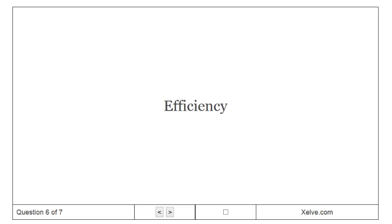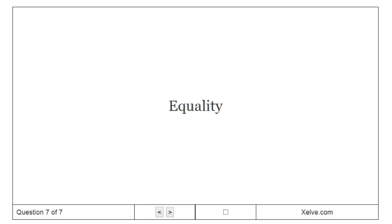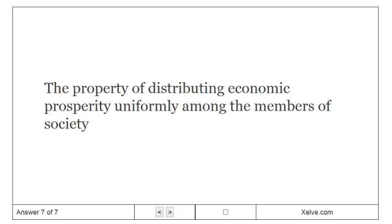Efficiency: the property of a resource allocation of maximizing the total surplus received by all members of society. Equality: the property of distributing economic prosperity uniformly among the members of society.